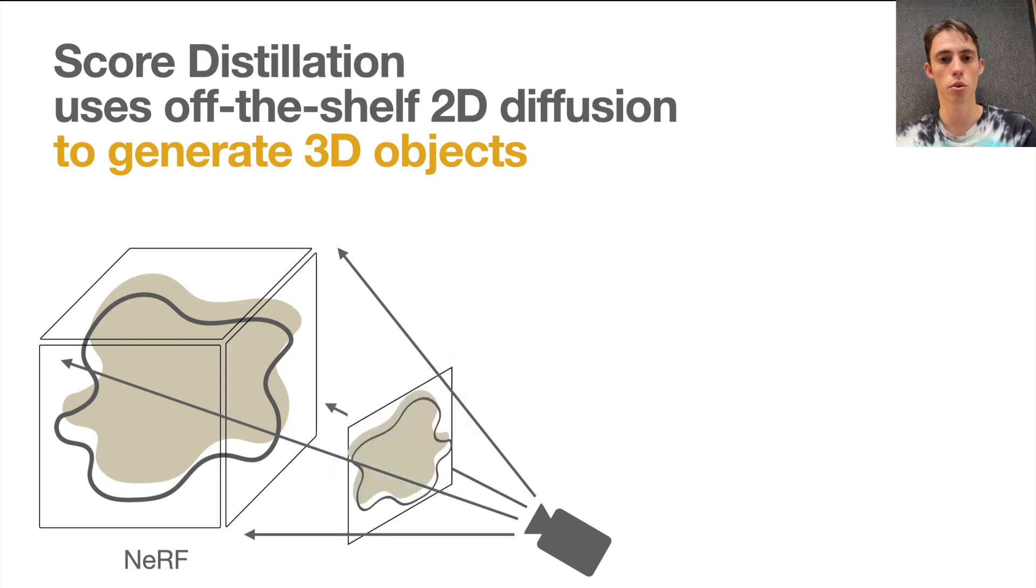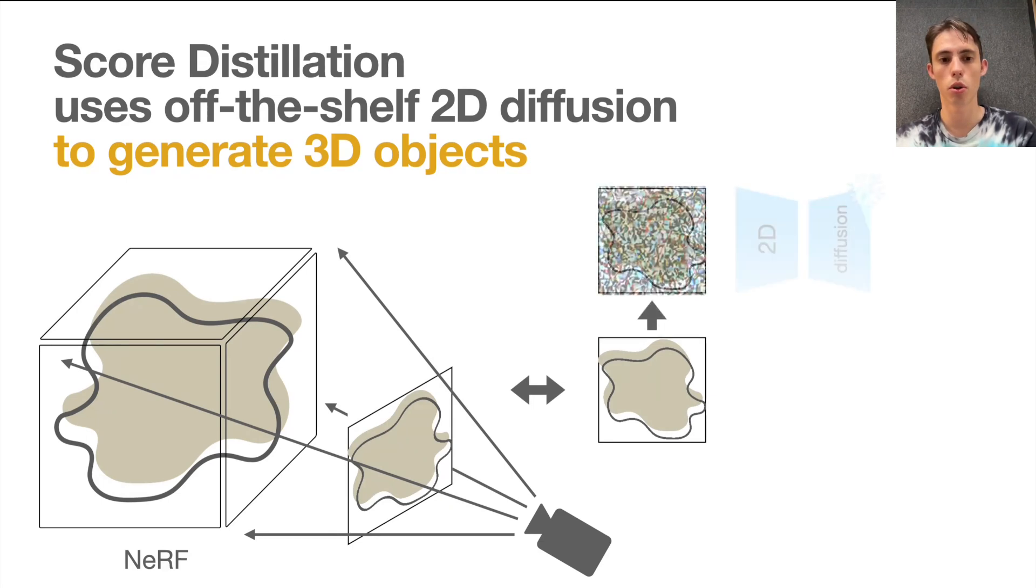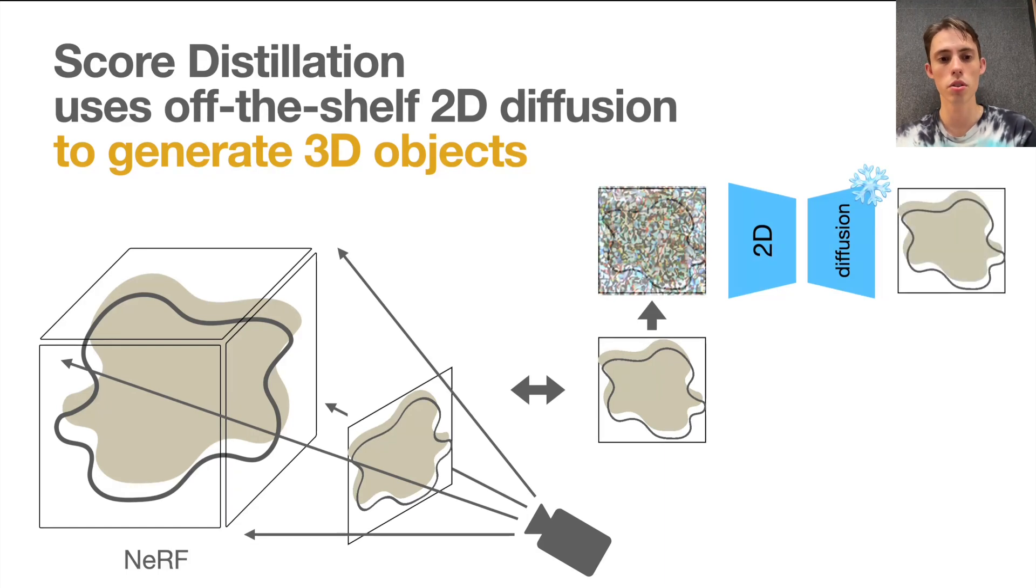After, we add random Gaussian noise to this rendering. Using a pre-trained and fixed image diffusion model, we remove the noise. In practice, however, the diffusion model not only removes the noise, but also adds a bias to the image that brings it closer to the desired prompt.